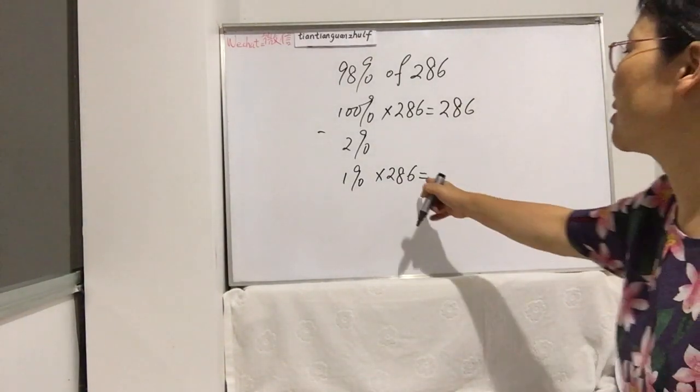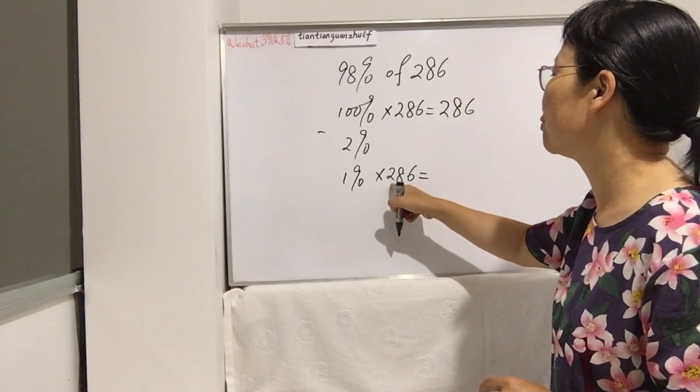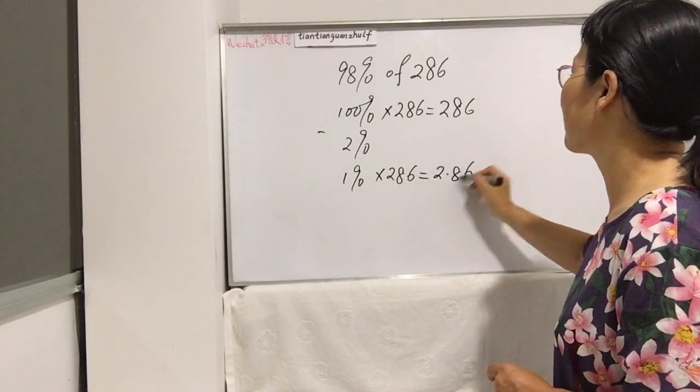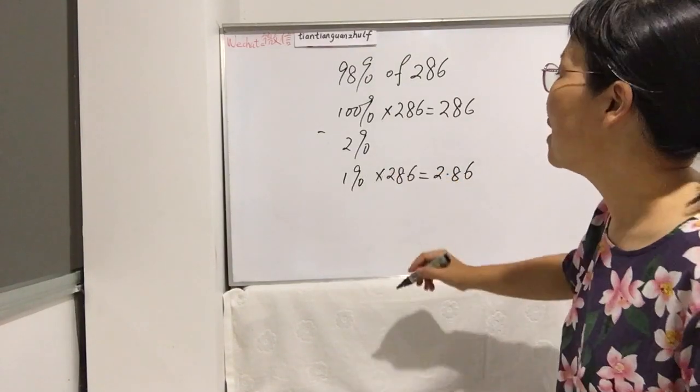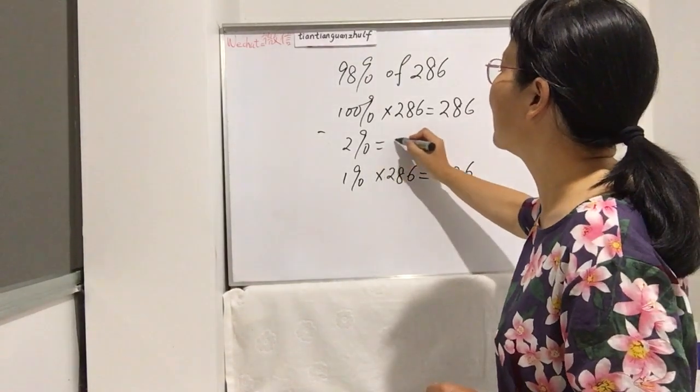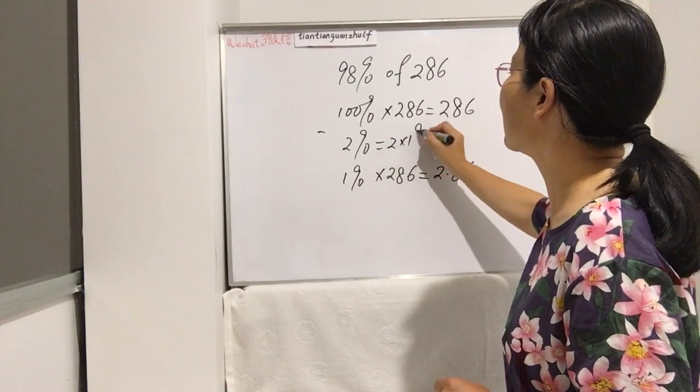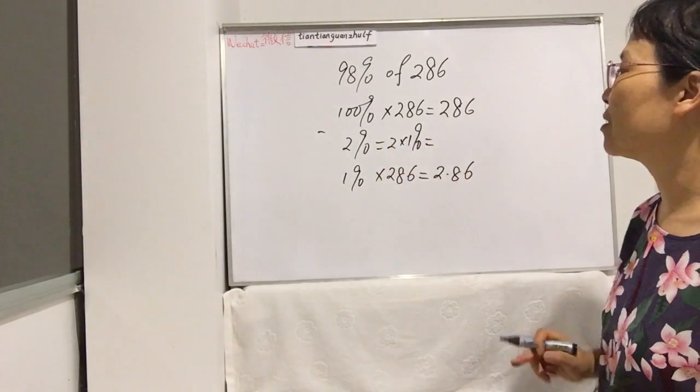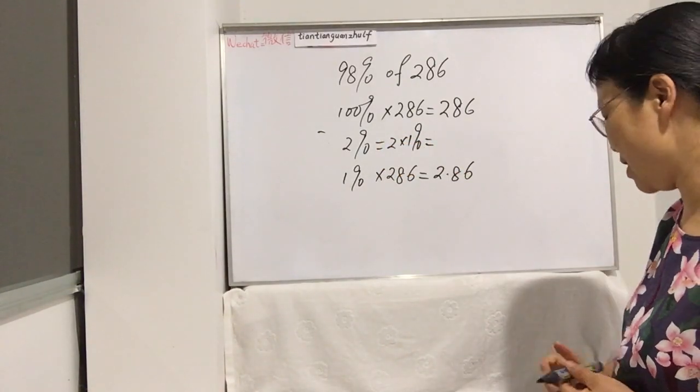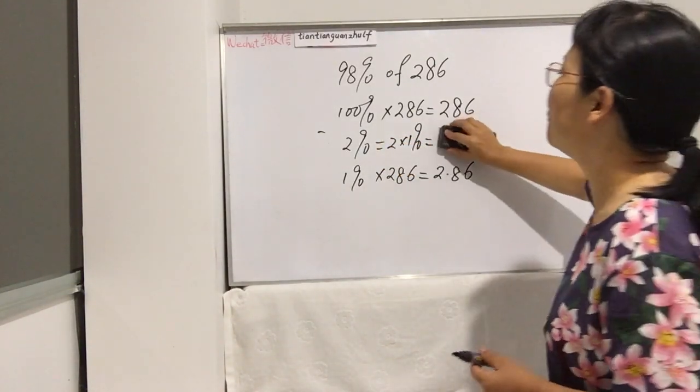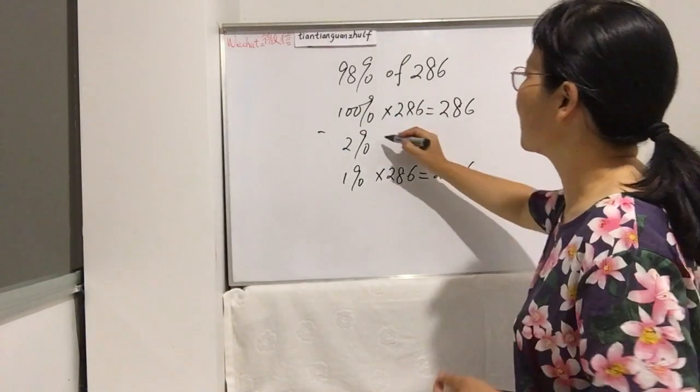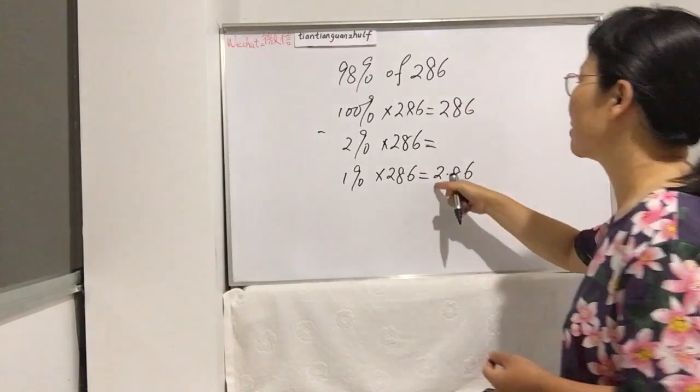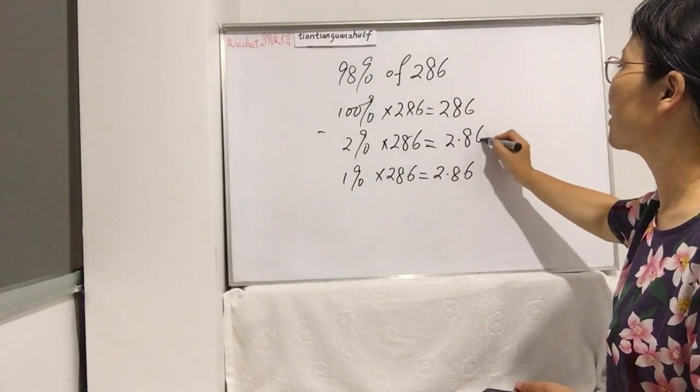So actually move two stops, so here 2.86. And now 2% actually is 2 times 1%, so 2 times 1% is 2%.